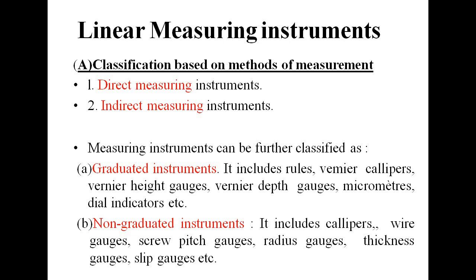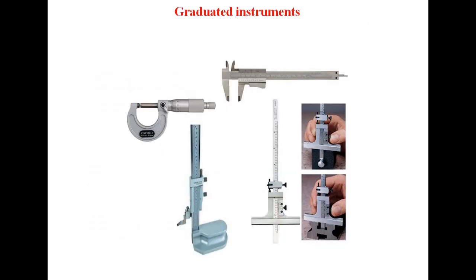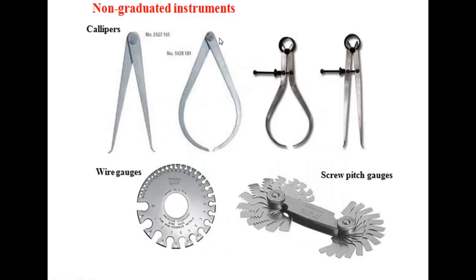Graduated instruments like vernier caliper, micrometer, height gauge, and depth gauge tell the exact reading — that is why they are called graduated instruments, because graduated lines are marked on their body. Non-graduated instruments like calipers, wire gauges, screw pitch gauges, internal calipers, and external calipers only indicate accept or reject, or transfer a dimension from one place to another.